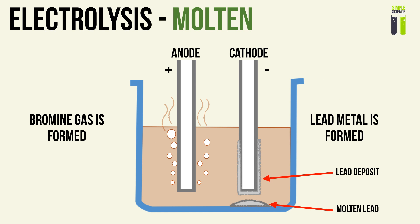Looking at the overall situation over time: lead metal forms at the cathode and can either deposit onto the cathode or, at the high operating temperatures needed to maintain the molten liquid, it will melt and deposit almost like a sludge underneath the cathode. At the anode, bromine gas is formed, so there will be bubbling taking place and a brown gas will be evolved.